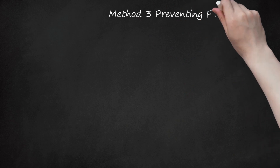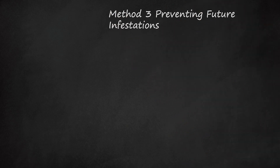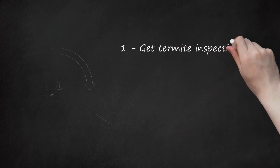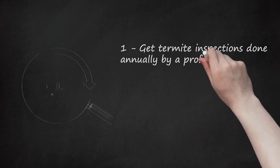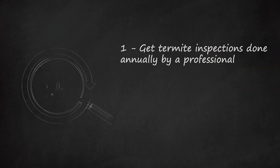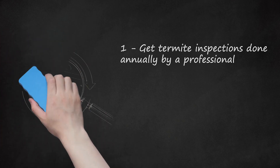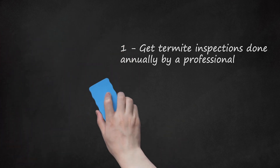Method 3: Preventing Future Infestations. Step 1: Get termite inspections done annually by a professional. A professional exterminator will typically have the knowledge to spot a termite infestation before it's too late. The earlier you catch termites, the easier it is to deal with them. If you live in a densely wooded area, you may be more prone to termites. Make sure the service is part of the National Pest Control Association or your local or state Pest Control Association. Ensure that the company offers a guarantee with their service.